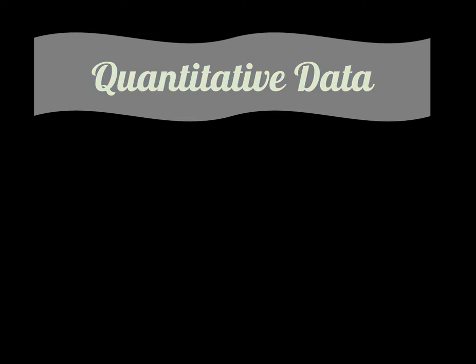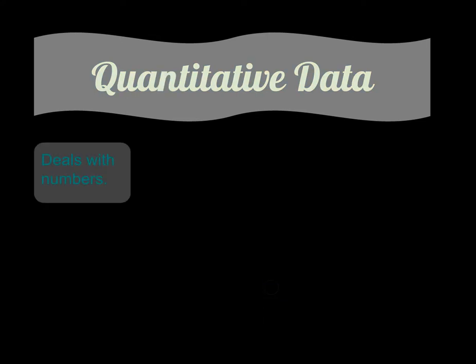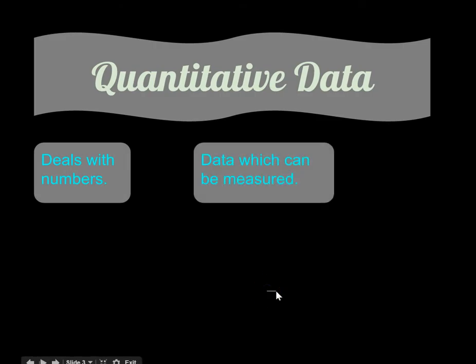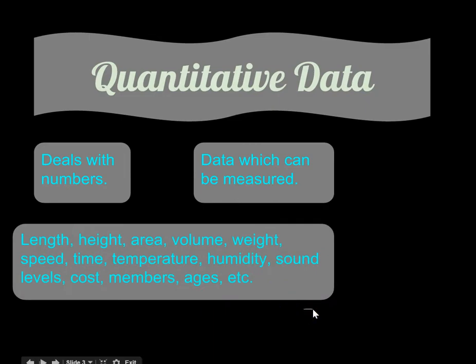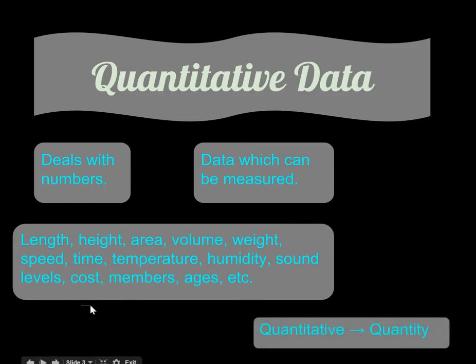Then we have quantitative data. Quantitative is going to deal with numbers — it's going to be actually measured. Stuff like length, height, area, volume, weight, speed, time, temperature, humidity, sound levels, cost, how many people, ages — all that stuff. You can remember it like this: if it is quantitative, it's going to have a quantity.